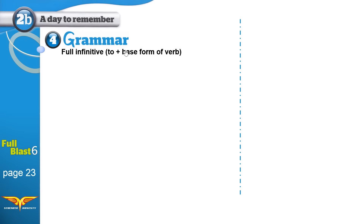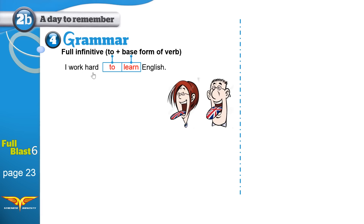In this grammar lesson, we are learning about the full infinitive. The full infinitive is the base form of the verb, like 'learn' — no -ing, no -s, no -ed — plus 'to'. For example, 'I work hard to learn English' uses the full infinitive. When I say 'I must learn English,' that is the bare infinitive — the base form with no 'to'.